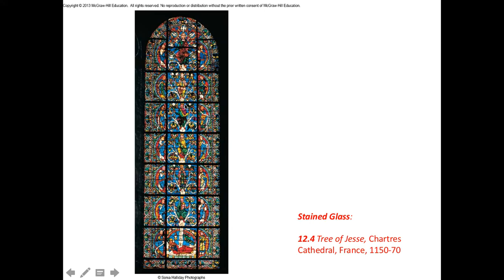These are leaded bars — there's a little more metal and structure to it. There are leaded structures to hold the different glass segments, because there's only so large you can make these little pieces, especially in 1150 — medieval times, in cathedrals, which was the height of stained glass.